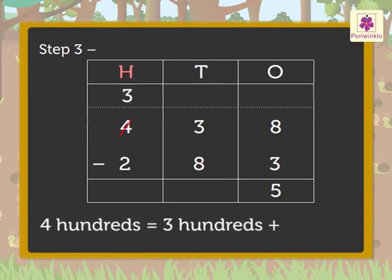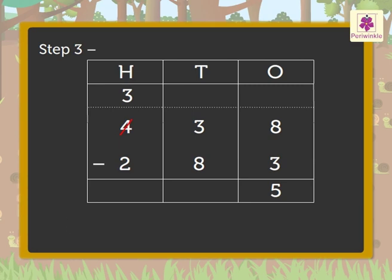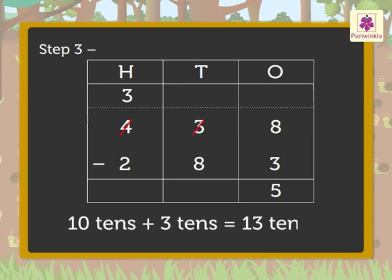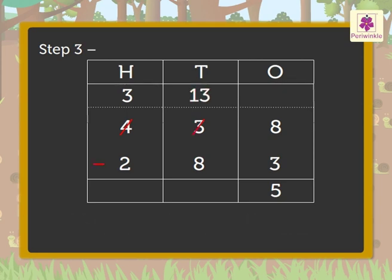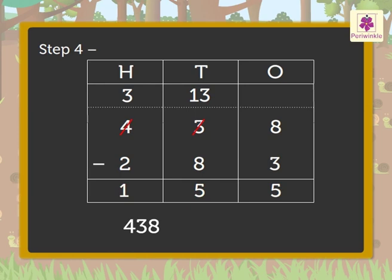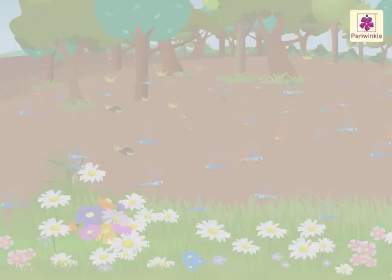Now we have ten plus three equals thirteen tens. Therefore, thirteen minus eight equals five tens; write five in the tens column. Step four: subtract the hundreds — three minus two equals one; write one in the hundreds column. So we get the answer as one hundred fifty-five. Four hundred thirty-eight minus two hundred eighty-three equals one hundred fifty-five.